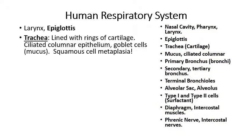The larynx is that lumpy part in the upper part of your throat, and within the larynx you have the epiglottis, which closes off the top of the trachea. The trachea is the tube that leads to the lungs, lined by rings of cartilage on the outside to prevent it from collapsing under negative air pressure. The trachea has ciliated columnar epithelium on the inside, and goblet cells that produce mucus. The sticky layer of mucus traps dust, pollen, and other things that might otherwise get into the lungs, and the cilia propel that mucus upwards to the top of the trachea so you can cough it out or swallow it.